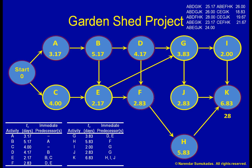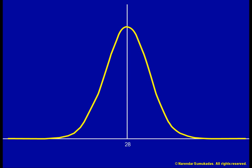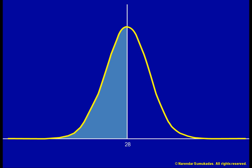The time estimate for the project, 28 days, is made up of the individual estimates for the critical path activities A, B, D, F, H, and K. These individual estimates follow beta distributions. When you add them together to get the project estimate of 28 days, this number follows the normal distribution. So our project is estimated to take 28 days on average, but the actual duration can be plus or minus that number according to this normal distribution. So what is the probability of finishing the project within 28 days? About 50%.